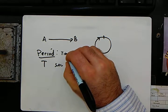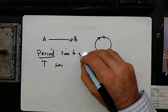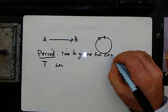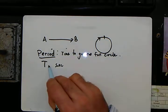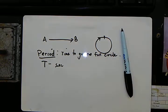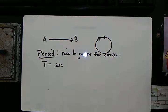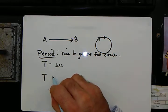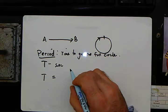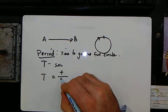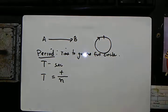Time to go one full circle, measured in seconds. Looking a little bit deeper, the period is also equivalent to the time it takes, small t, over n, the number of trips around a circular path.